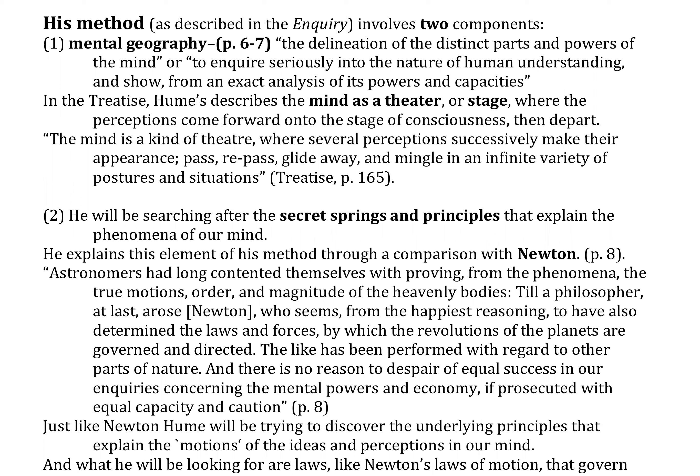Locke had said that he wants to follow a historical, genealogical method — studying how we acquire our ideas, how our ideas arise in our mind. Hume is going to be continuing this project. He's also going to be interested in this genealogical question of how our ideas arise in our mind, but in investigating this question, he's going to apply the Baconian method to the human mind itself.